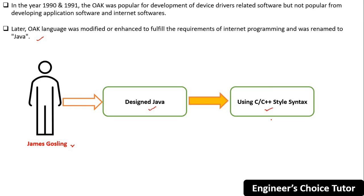That is why the syntax is very similar across these three programming languages. James Gosling designed Java with a C/C++ style syntax so that system and application programmers would find it familiar. The Java language was released by Sun Microsystems in three editions.